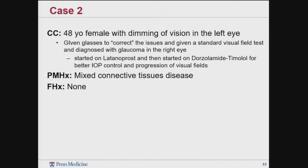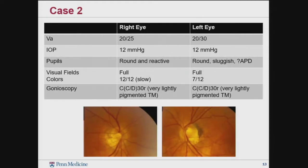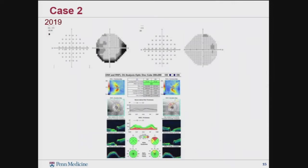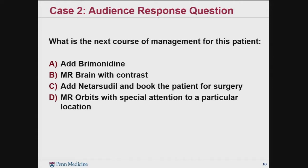The final case is a 48-year-old female who was given glasses to correct her complaint of dimming vision. She had a mild history of mixed connective tissue disease and no other family history. Her exam showed pretty preserved vision with normal pressures. She had a questionable APD in the left eye; her color testing was down in the left eye and slow in the right eye. Gonioscopy was normal. Her 2016 visual fields were consistent with some superior thinning in the left eye, and she progressed significantly in a short period of time.